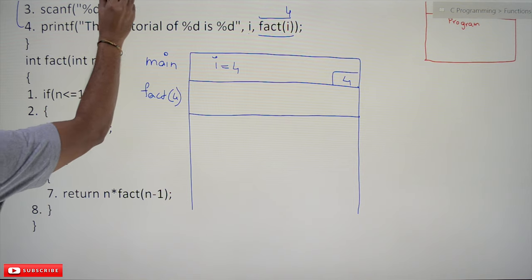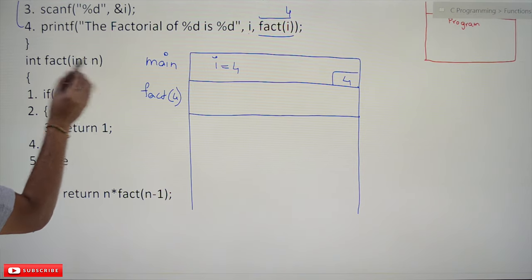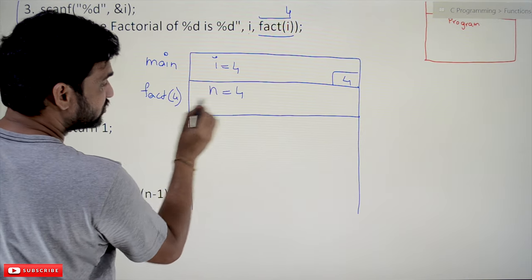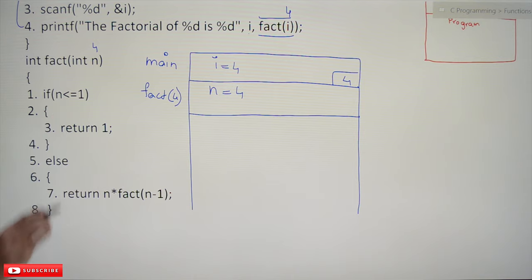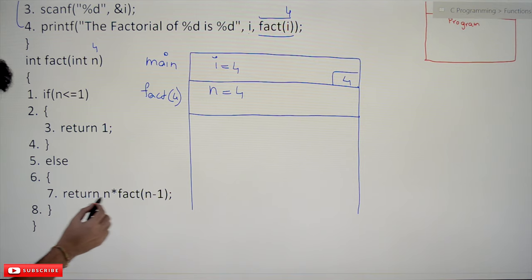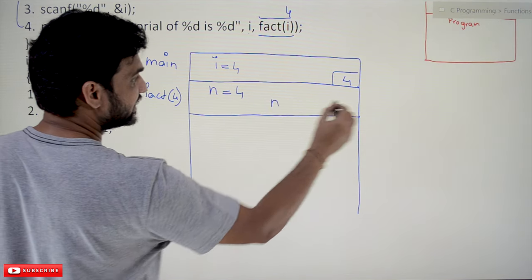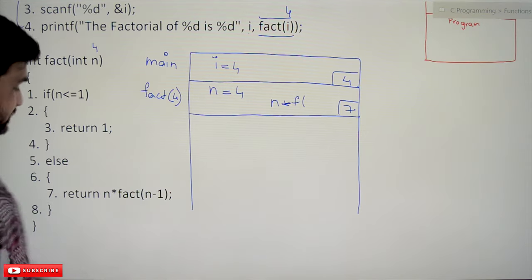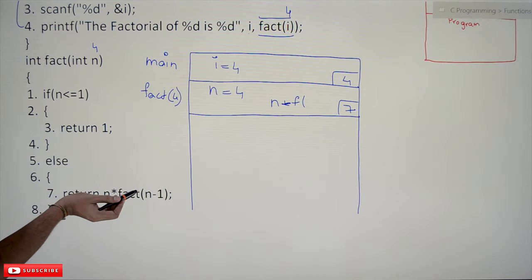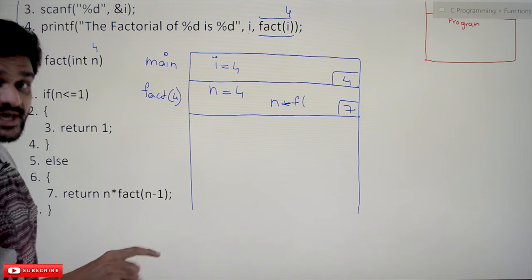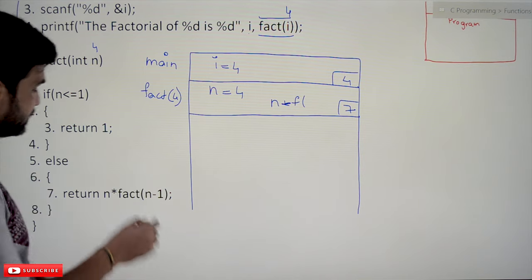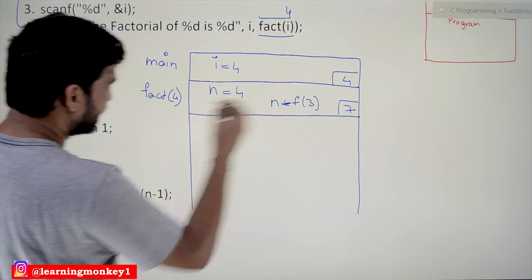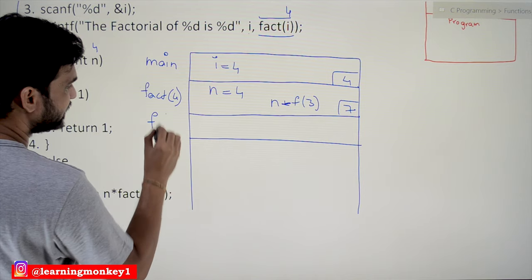We are in the fact function. A new activation record has been created and the value of n is equal to 4 in this factorial function fact(4). Is n less than or equal to 1? No, so we go into the else statement: return n into fact(n-1). We stop at line 7 and another function call is made — fact(n-1). This is what we call recursion: a function calling itself. So fact(3) is now called.